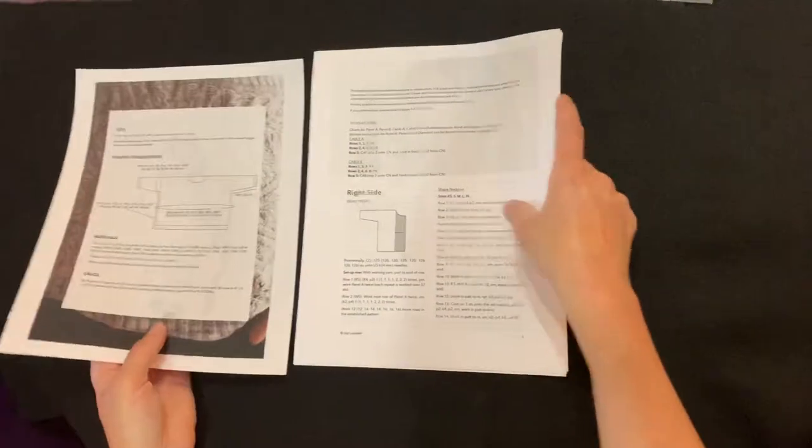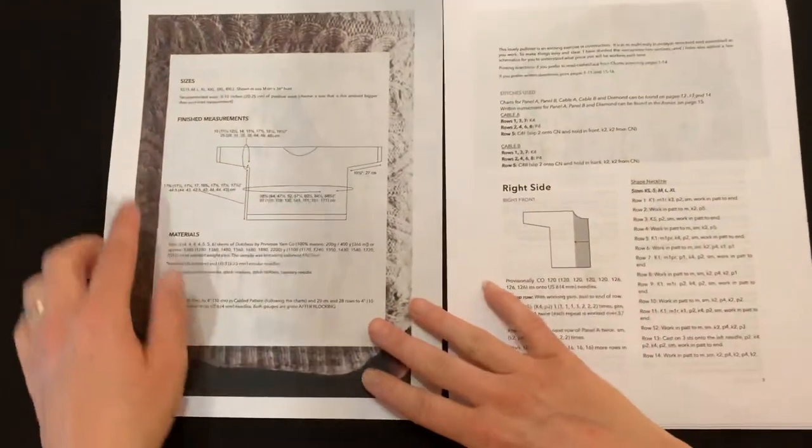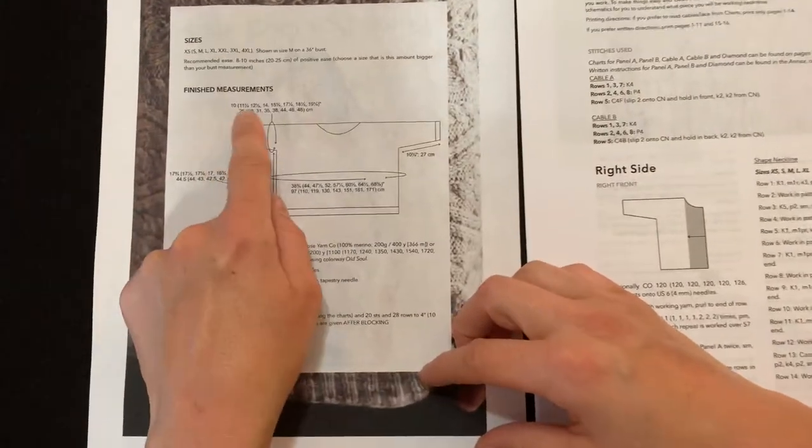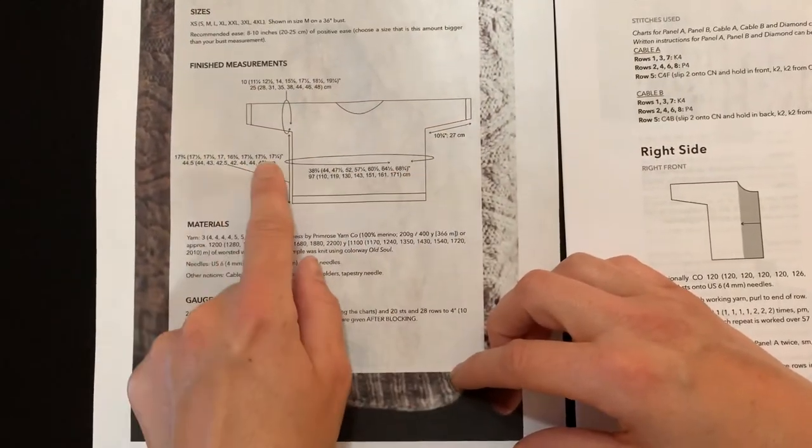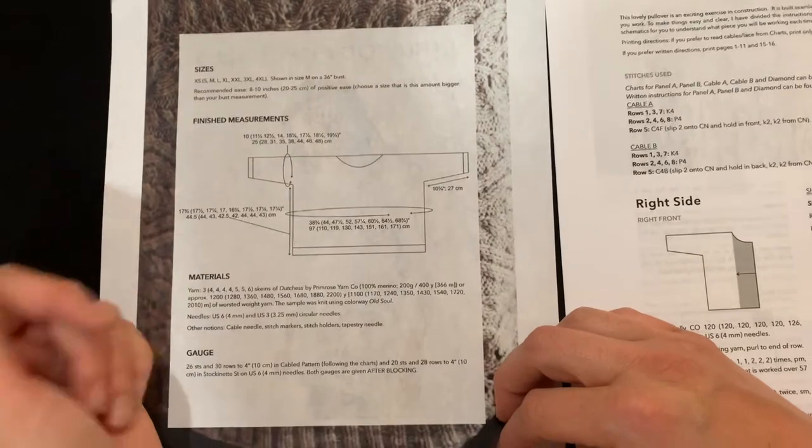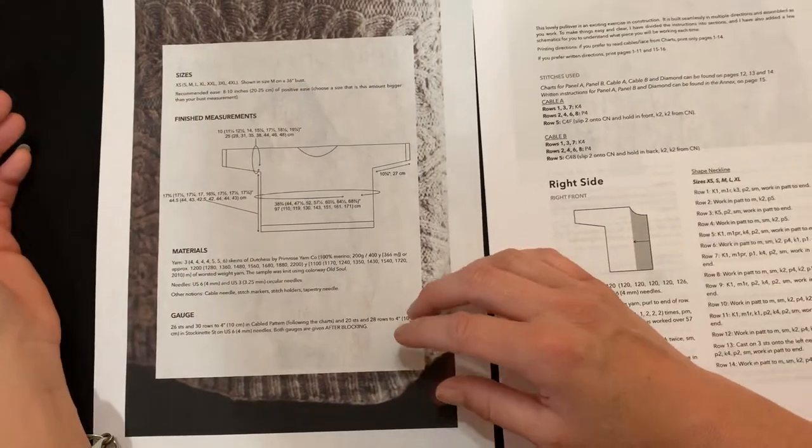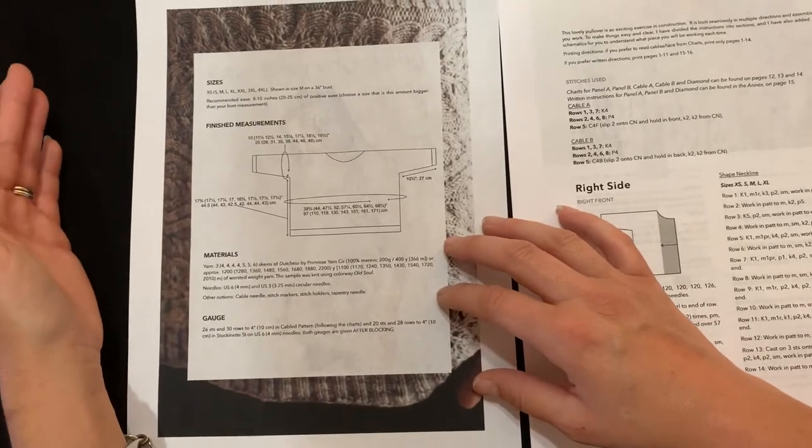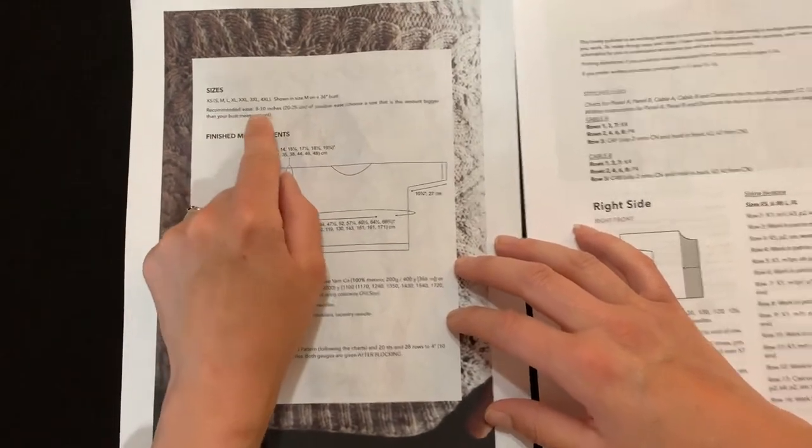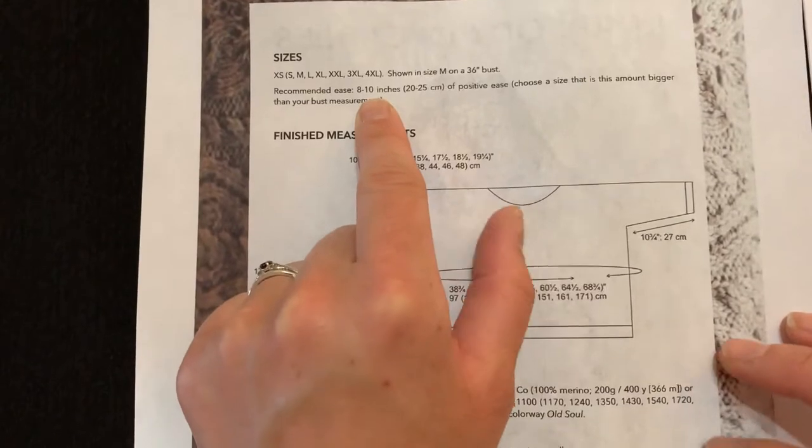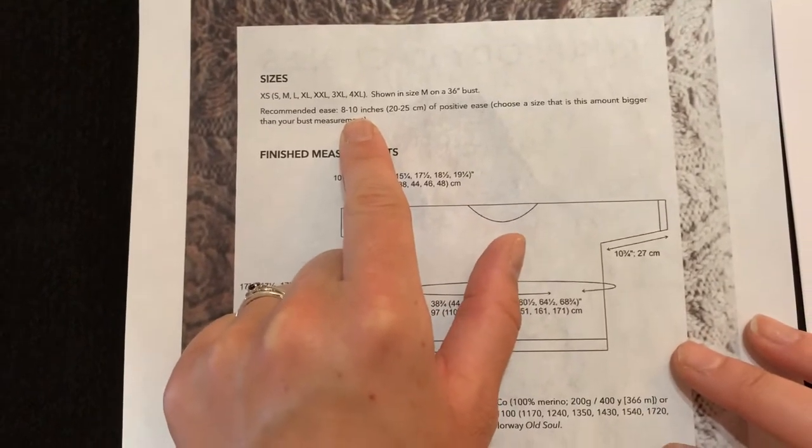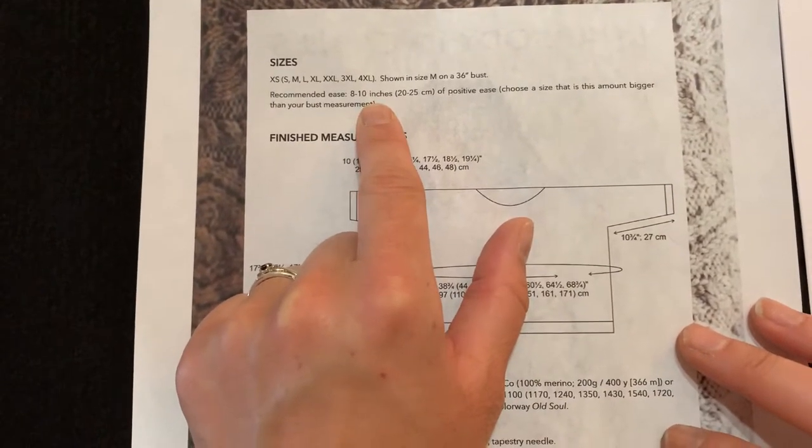Now when you open up inside you'll see there are many sizes. This whole string of numbers, these are all different sizes. So for this pattern she has a note that this pattern is written to have 8 to 10 inches of positive ease. That means that is 8 to 10 inches of fabric bigger than you.